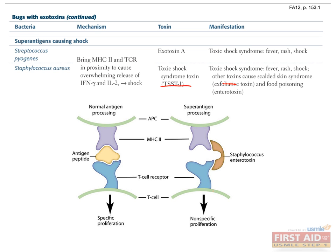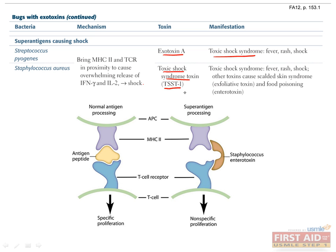Strep pyogenes can also produce a toxin known as a superantigen, listed under the heading of superantigens causing shock. Superantigens bind directly to MHC-2 and T cell receptors, activating large numbers of T cells to stimulate release of cytokines such as interferon gamma and interleukin-2. The figure below shows how a superantigen bridges over both the MHC-2 receptor and the T cell receptor. Exotoxin A of Strep pyogenes can cause a toxic shock-like syndrome. Staph aureus also produces a superantigen known as toxic shock syndrome toxin (TSST-1), which results in toxic shock.